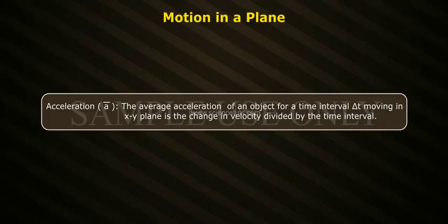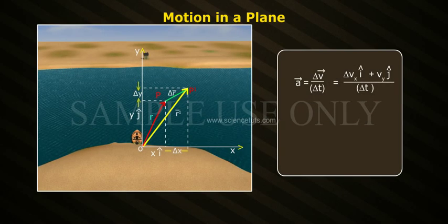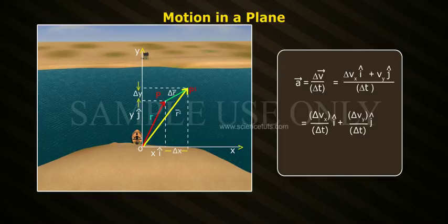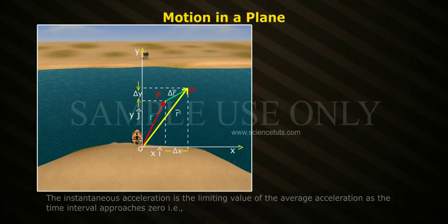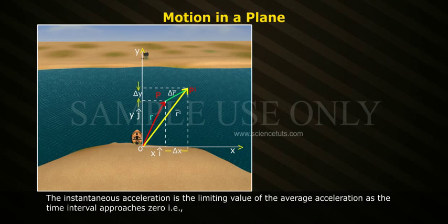Acceleration. The average acceleration A bar of an object for a time interval ΔT moving in the XY plane is the change in velocity divided by the time interval. A bar equals ΔV bar by ΔT, which equals ΔVx i-cap plus ΔVy j-cap divided by ΔT. That implies A bar equals Ax i-cap plus Ay j-cap.